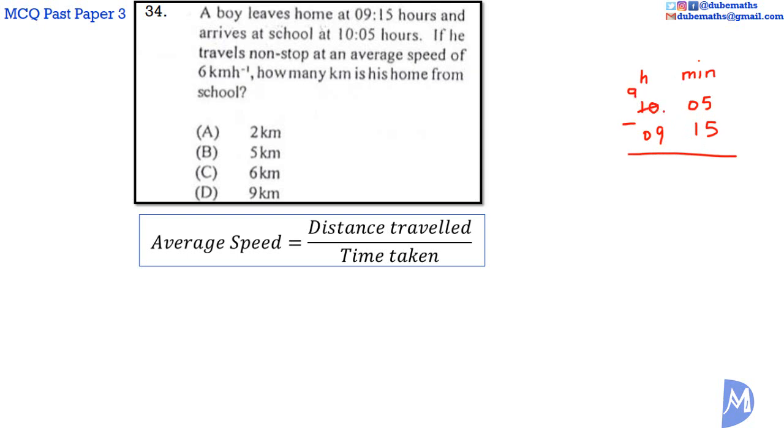1 hour is equal to 60 minutes. 60 added to 5 is 65. 65 subtract 15 is equal to 50. 9 hours subtract 9 is equal to 0. So we are left with 50 minutes.